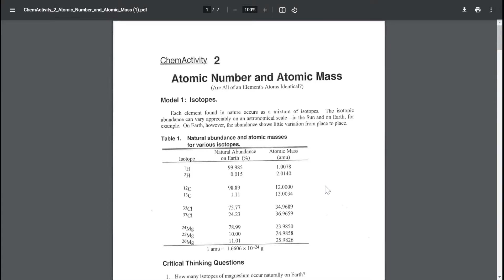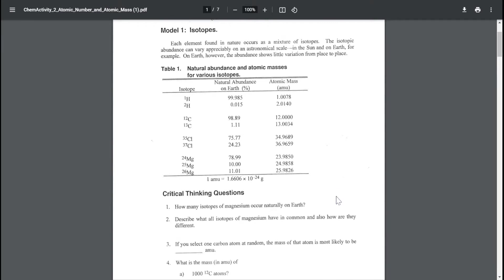We're now looking at ChemActivity2, atomic number and atomic mass. We're still looking at isotopes, starting with how many isotopes of magnesium occur naturally on Earth. In the table, we can see there are three different magnesium isotopes.